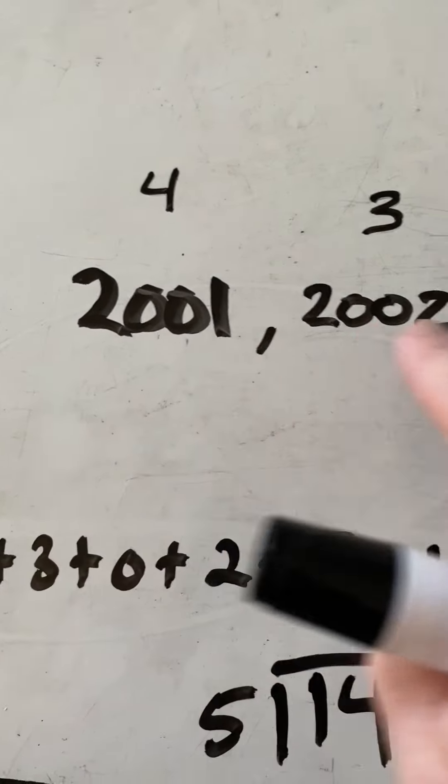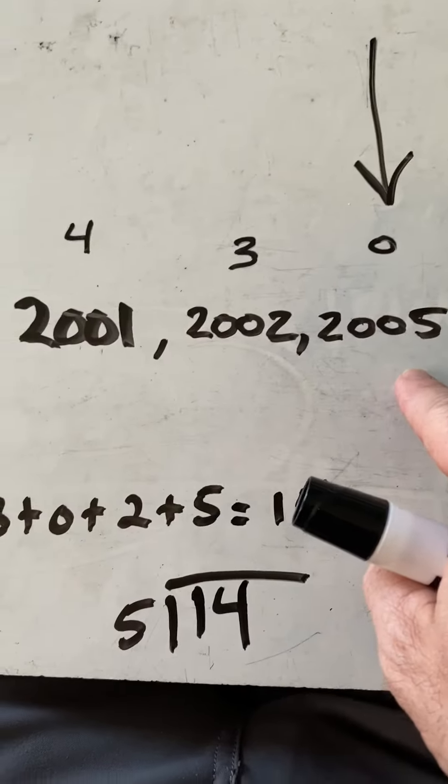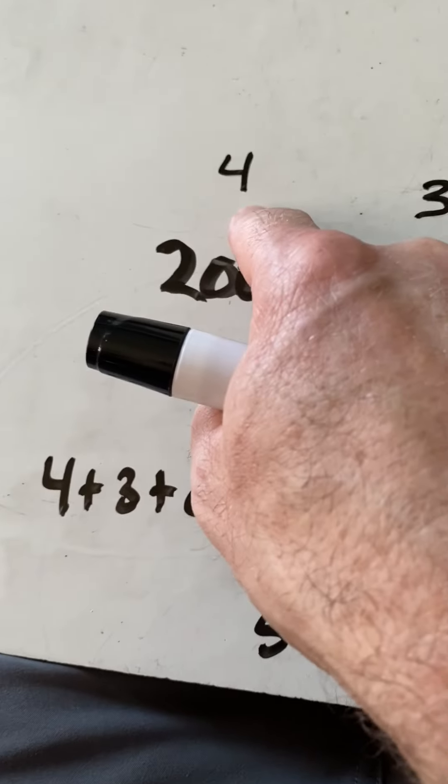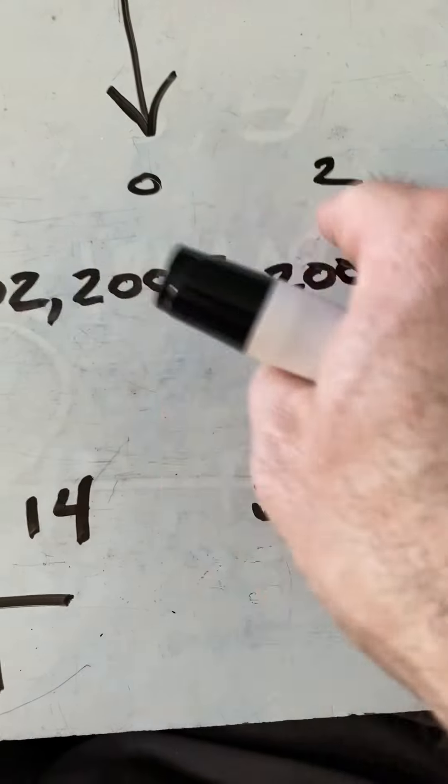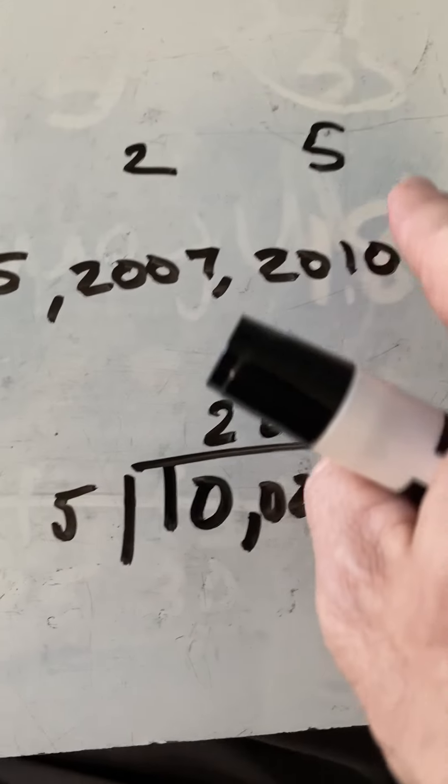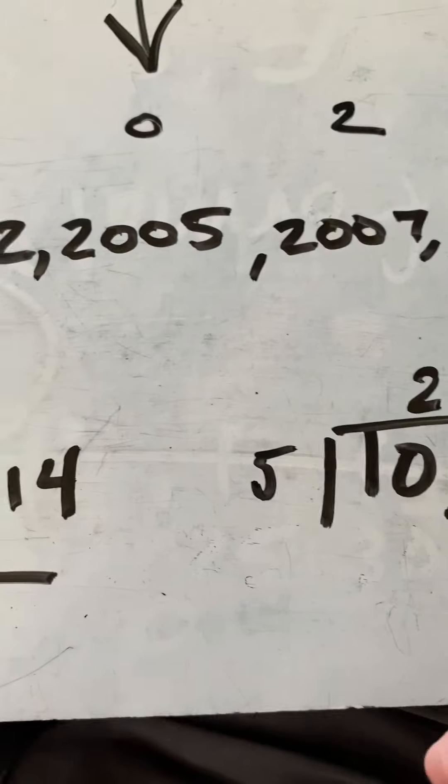And 2001 is 4 years from the mean. So that's where the 4 comes from. 2007 is 2 from the mean, and 2010 is 5 from the mean.